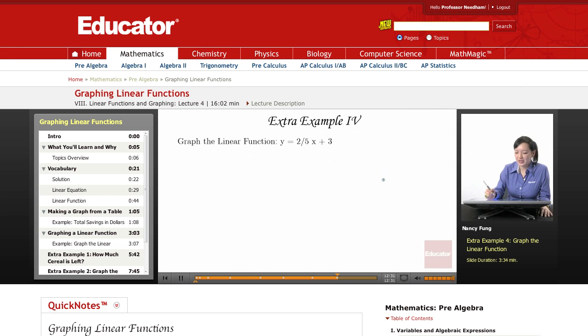Graph the linear function y equals 2 fifths x plus 3. So y equals 2 fifths x plus 3. Once again, we're going to put an input and output table. So x and y.